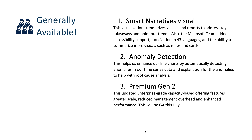The second generally available feature is Anomaly Detection. This helps enhance line charts by automatically detecting anomalies in time series data and providing explanations for those anomalies to help with root cause analysis. The third one is Power BI Premium Gen 2.